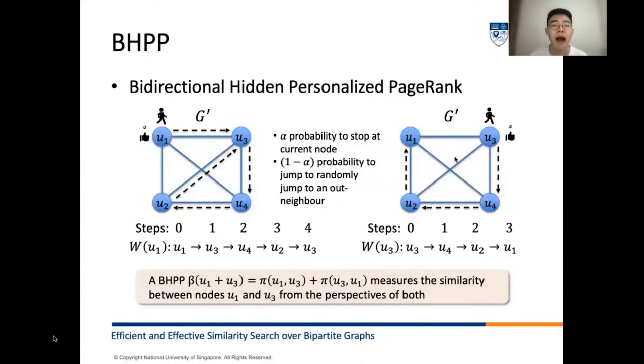Note that HPP pi(U1, U3) only reflects the similarity between nodes U1 and U3 from the perspective of node U1, which is biased. A simple way to address this issue is to consider the bi-directional HPP or BHPP. That is, we represent the similarity between nodes U1 and U3 by the BHPP at U1 U3, which is a summation of HPP pi(U1, U3) and pi(U3, U1).